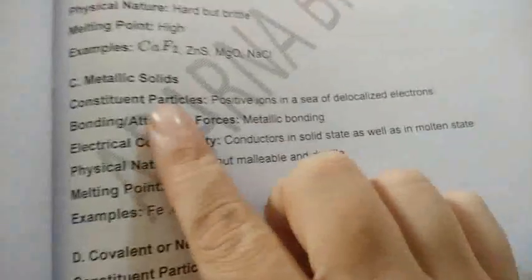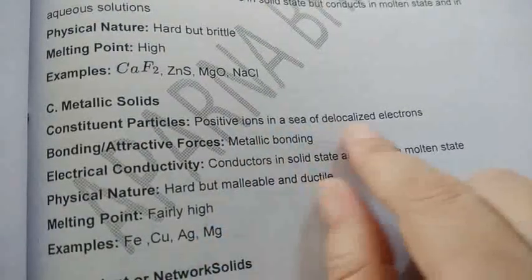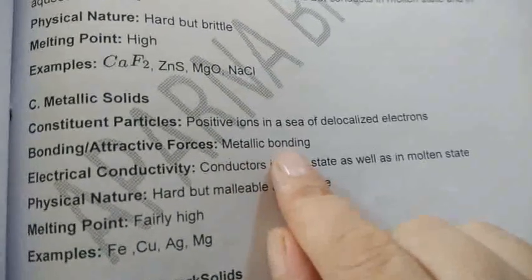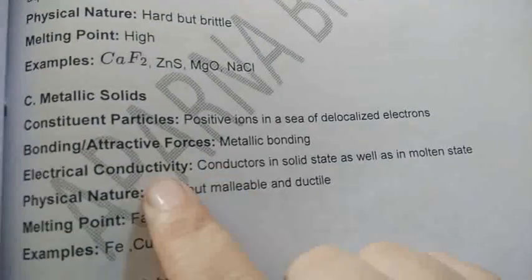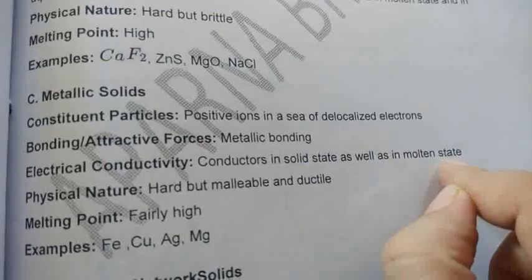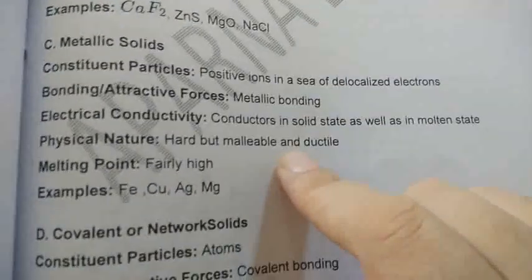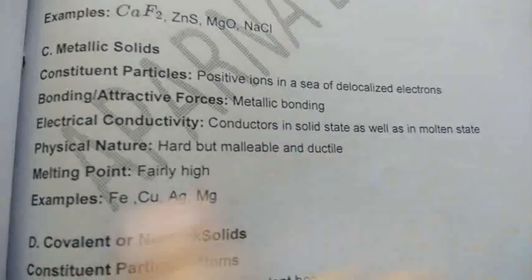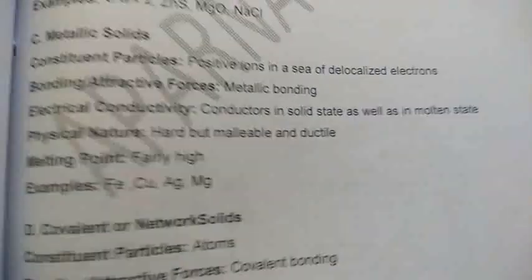Metallic solids have positive ions delocalized in an electron sea as their constituent particles. Their bonding is metallic bonding. They are conductors in both solid and molten state. Their physical nature is hard, but they are malleable — meaning they can be beaten into sheets — and ductile, meaning they can be drawn into wires. Their melting point is fairly high.